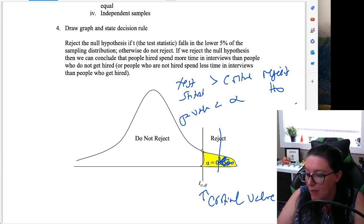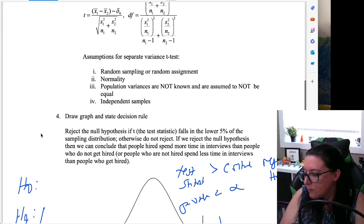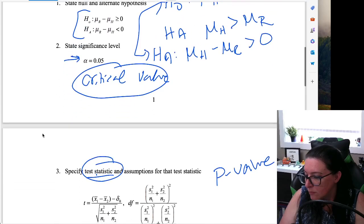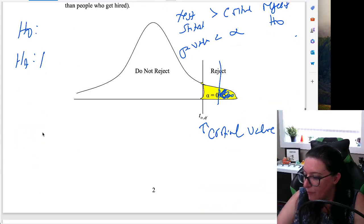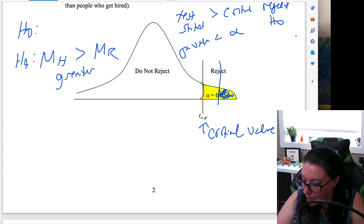Well, this particular graph and decision rule are based on the fact that this null hypothesis and alternative is that those who are hired are more than the rejected. Okay, so in this case, you see how this is greater, then it's got to be a right-tailed test.